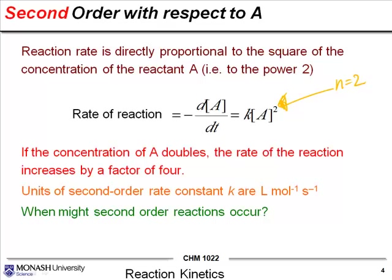Does that make sense? So if we have 1 squared, that is just 1. If we have 2 squared, that equals 4. You quadruple the rate as you double the concentration.